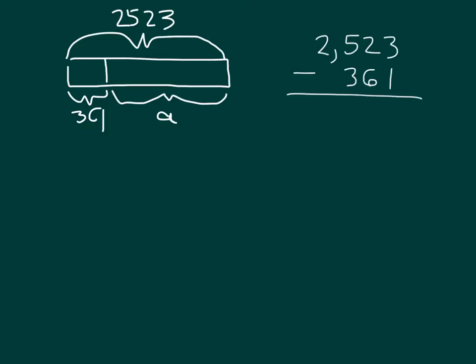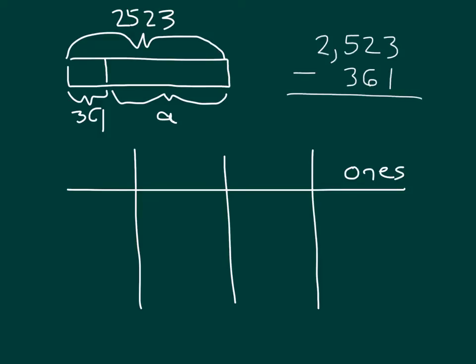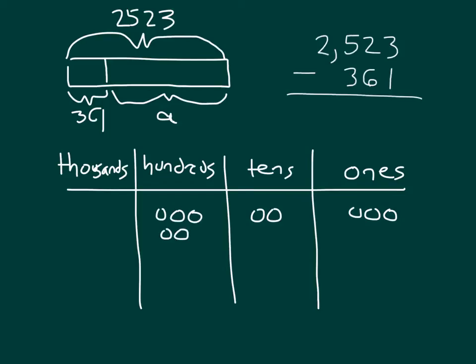Let's set up a place value chart to show with disks how it is that the subtraction works, and we'll tie it together also with that standard algorithm. Let's label the places. We have ones, then tens, then hundreds, and then we have thousands. Of the two numbers that we have here, in this instance, we're only going to model the number that we are taking away from. So we start with that 2,523, and if we decompose it and break it apart, we have three ones, two tens, five hundreds.